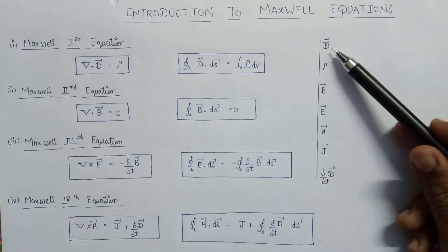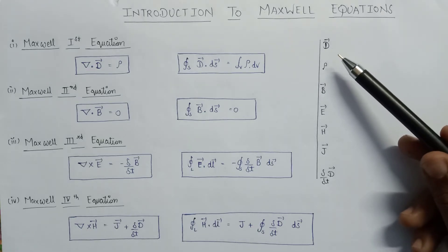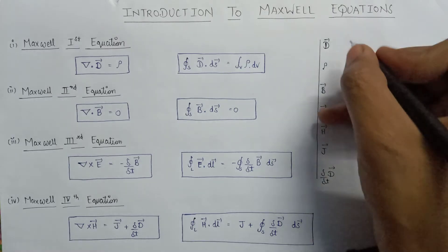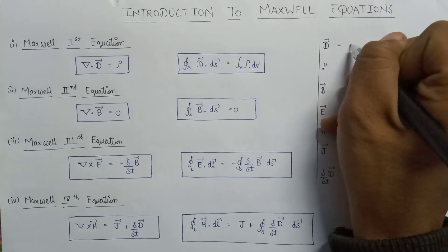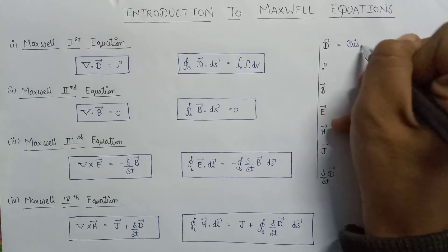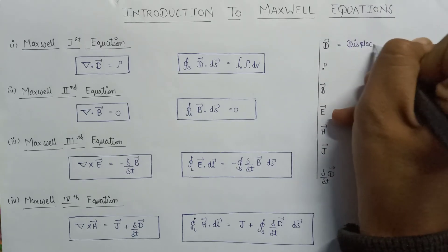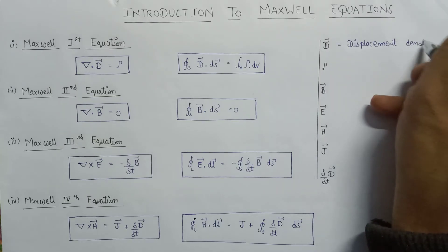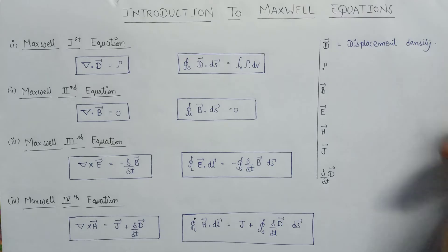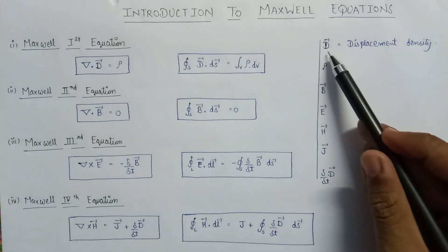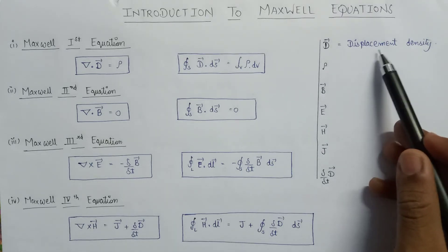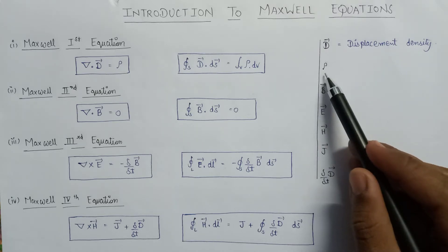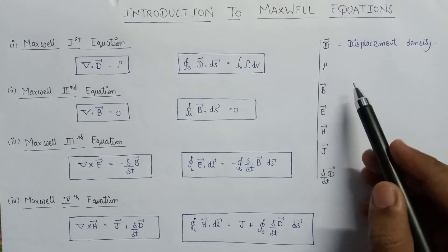The first parameter is D. What is this D? This is nothing but displacement density. So whenever we write D, we mean that it is displacement density. Here Rho represents the volume charge density.